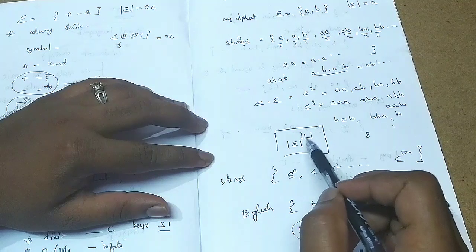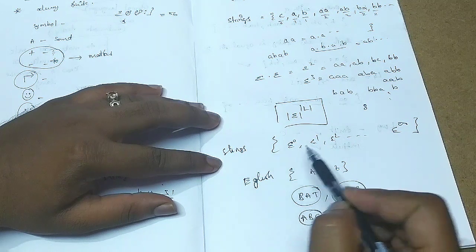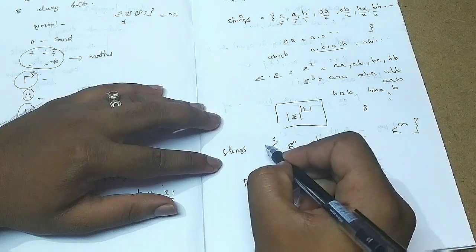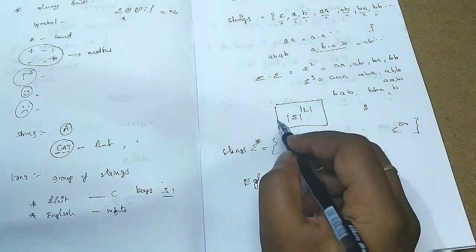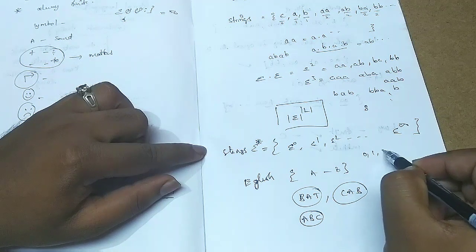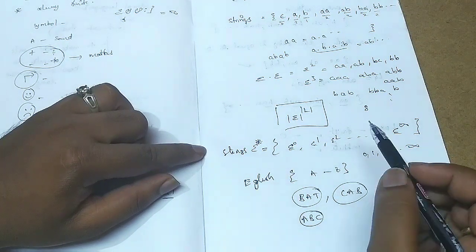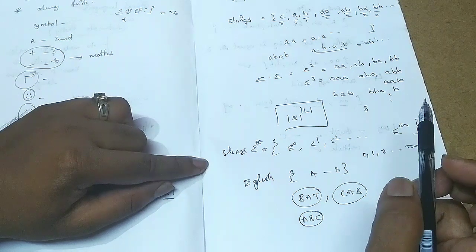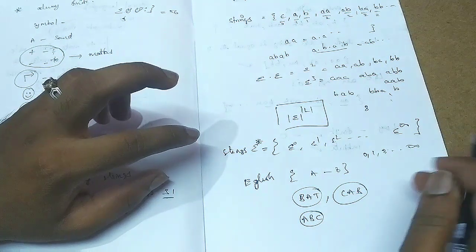If you want to construct how many strings of a given length, take the cardinality of the sigma set and raise it to the power of the length of the string you want to consider. The set of all strings is denoted by sigma star (Σ*), because in FLAT we have this symbol which represents strings of length 0, 1, 2, 3 and so on to infinity — called Kleene's closure.